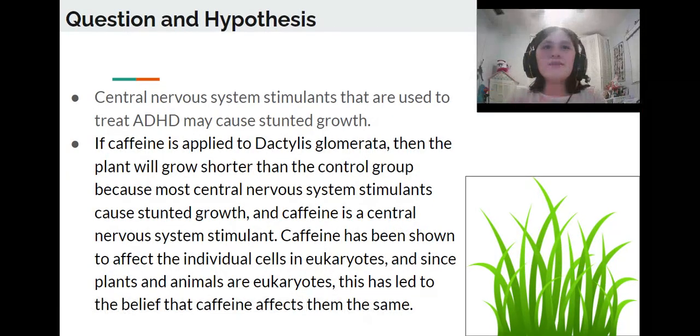Question and Hypothesis. Central nervous system stimulants that are used to treat ADHD may cause stunted growth. If caffeine is applied to Dactylis glomerata, then the plant will grow shorter than the control group, because most central nervous system stimulants cause stunted growth, and caffeine is a central nervous system stimulant.